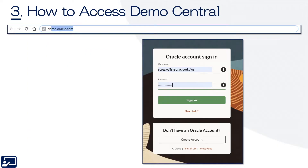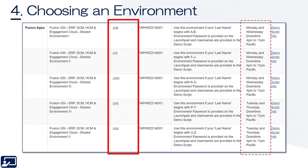Third topic: how to access Demo Central. Users need to have a single sign-on Oracle ID which has been granted access to Demo Central. Fourth topic: choosing an environment. Once you've logged into Demo Central, navigate to the Instant page and select one of the environments under the Fusion Apps section. In theory, you're supposed to choose based on your last name, although I don't believe many do this — they simply hunt for an environment that has decent performance at the present moment.